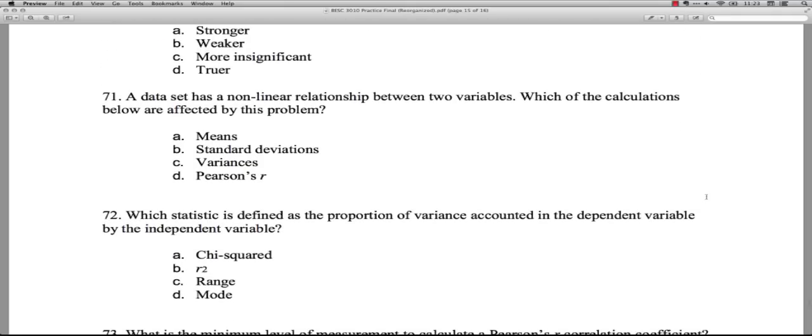Question 71: A data set has a non-linear relationship between two variables. Again, what that means is it's not a straight line that you can draw in the scatter plot. It's something else, a curved line, an angled line. Which of the calculations below are affected by this problem? A, Means. Means are calculated separately for each variable. And we're talking about an association here. So it's not going to be that.